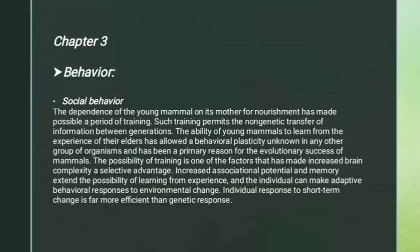Chapter 3 includes Behavior. Social Behavior: The dependence of the young mammal on its mother for nourishment has made possible a period of training. Such training permits the non-genetic transfer of information between generations. The ability of young mammals to learn from the experience of their elders has allowed a behavioral plasticity unknown in any other group of organisms, and has been a primary reason for the evolutionary success of mammals.